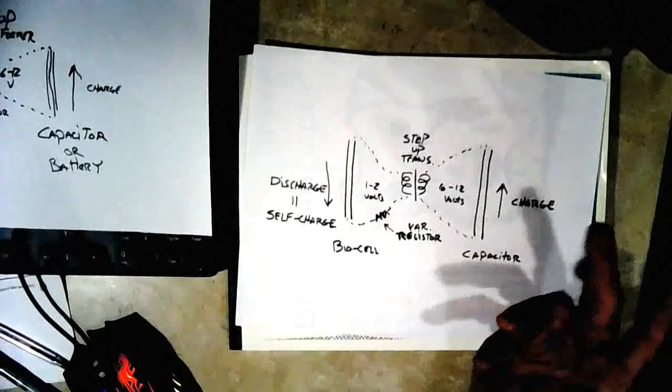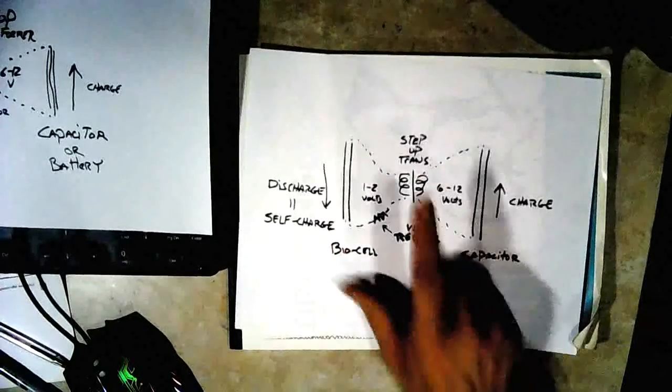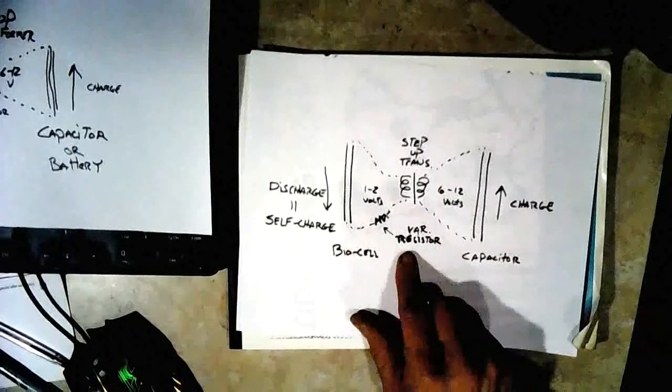So we've just got four parts: your biocell, a capacitor, a step-up transformer, and a variable resistor.